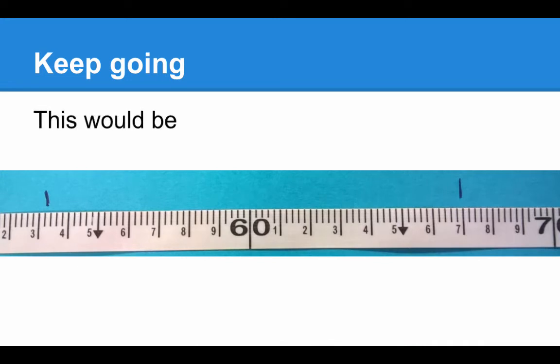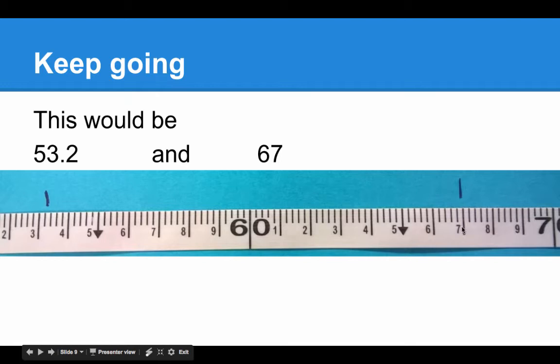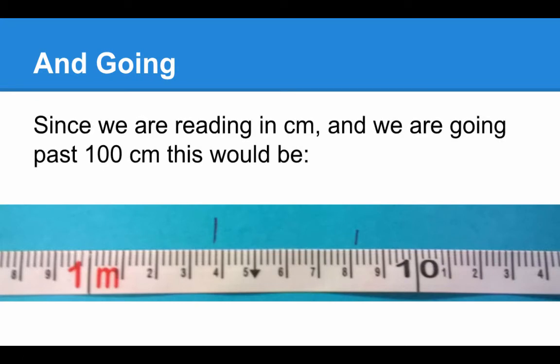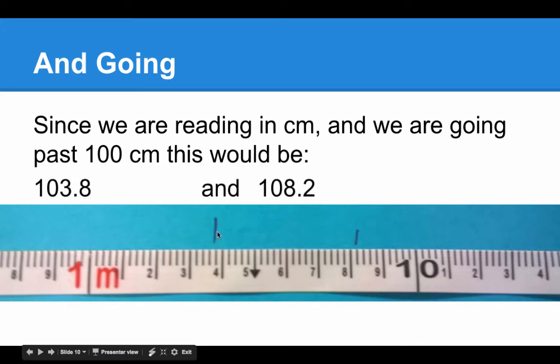Keep going. These measurements. Now notice, I can't see the 50, but I see the 60. So since I can see the 60, I know that 50 comes before 60. And this measurement should be 53.2. And this one way down here is 67. So I'm measuring this in centimeters. And keep going. Since we're reading in centimeters, we're looking past 100. Because remember, one meter is 100 centimeters. So these would be 103.8, and 108.2.